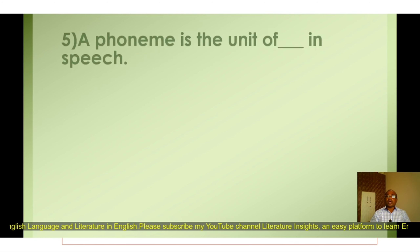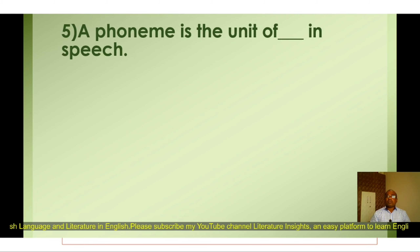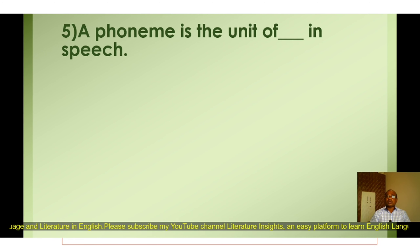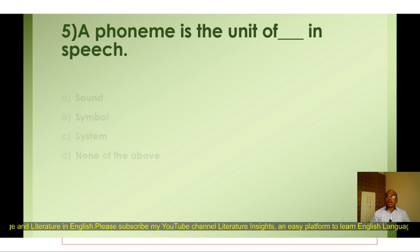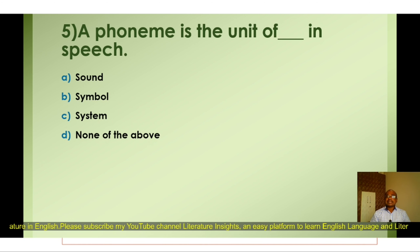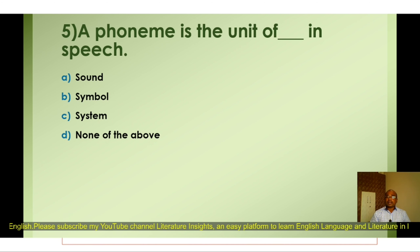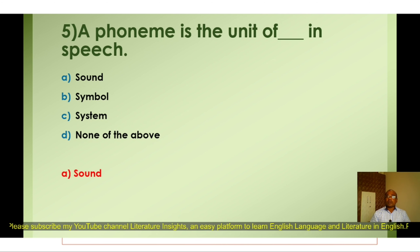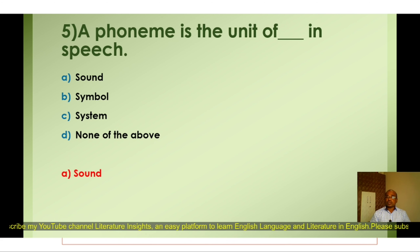Question number five: A phoneme is the unit of — in a speech. A) Sound, B) Symbol, C) System, D) None of the above. The correct option is A) Sound. A phoneme is the smallest unit of sound in a speech.